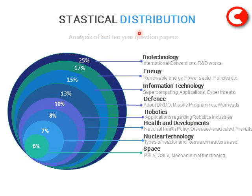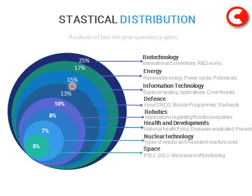This is the statistical distribution of the analysis I did for last 10-year question papers of UPSC exams. I found that 5% of questions were from Space, 7% from Nuclear Technology, 8% from Health and Developments, 10% from Robotics, 13% from Defense, around 15% from Information Technology, 17% from Energy, and the largest portion — 25% — was from Biotechnology.